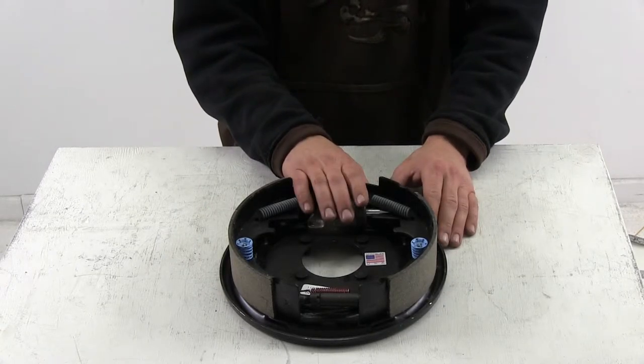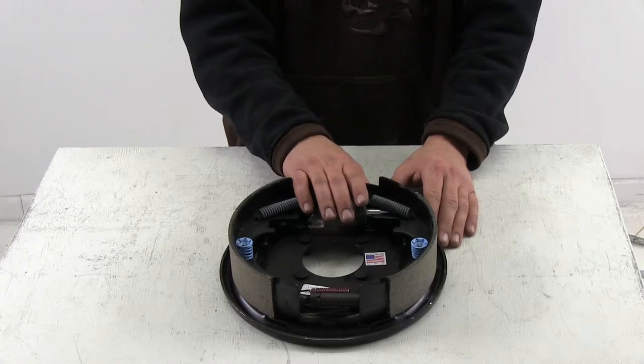Couple this assembly with the left hand side and the pair will create 3,500 pounds in braking capacity.